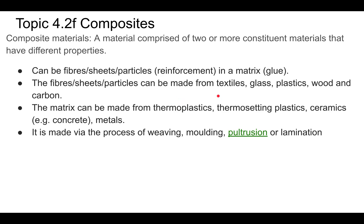The matrix can also be other kinds of glues — resin, for instance, is basically a plastic. The processes you can go through to make these different composites include weaving and molding, as seen in that first video. Pultrusion is a combination of the words 'pull' and 'extrusion' — you're pulling several layers of cloth through resin and making sheets of composite material out of that.